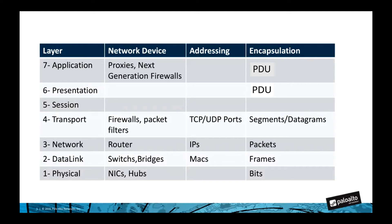At the next layer down, the SDU is encapsulated with a header, producing a layer six PDU, and then it's passed down to the next layer. This operation is repeated again and again until it reaches layer one, where the data is transmitted to the receiving device.